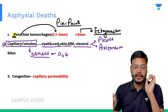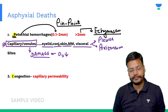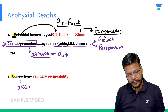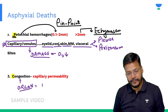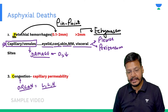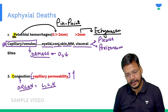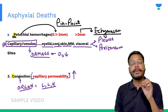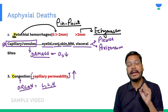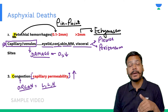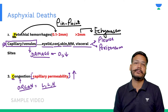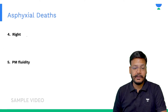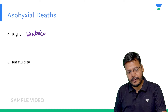Cyanosis and petechial hemorrhages are done. Now the third C is congestion — congestion of organs, which is very important. Organs like liver, lung, and heart show congestion. The mechanism is increased capillary permeability. So the classical triad CPC: cyanosis, petechial hemorrhage due to capillary and venule damage, and congestion of organs due to increased capillary permeability. Another important feature is right ventricular enlargement.